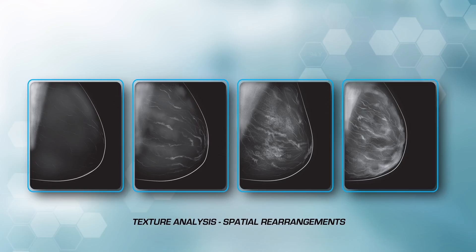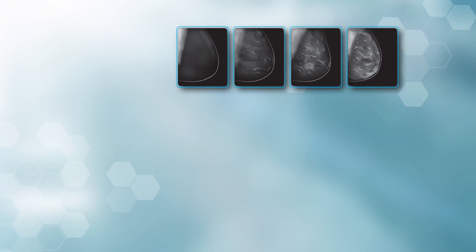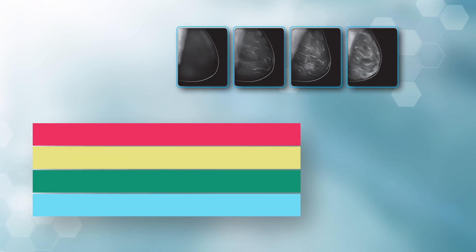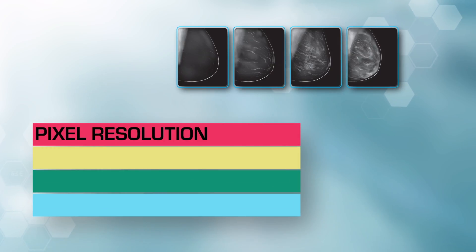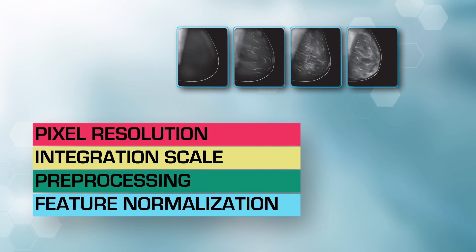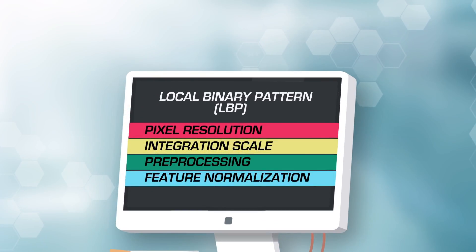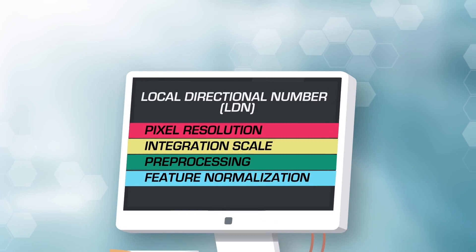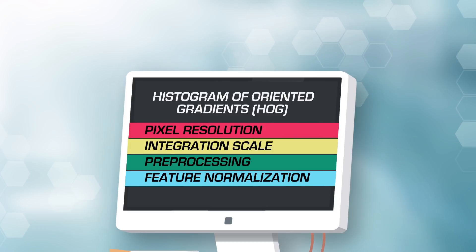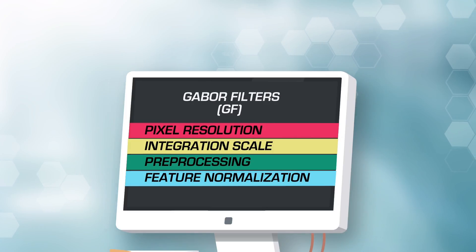To improve the specificity and accuracy of mass classification by texture analysis, researchers studied the effect of multiple factors — pixel resolution, integration scale, pre-processing, and feature normalization — on the performance of five common texture analysis methods: local binary pattern, local directional number, histogram of oriented gradients, Heralix features, and Gabor filters.